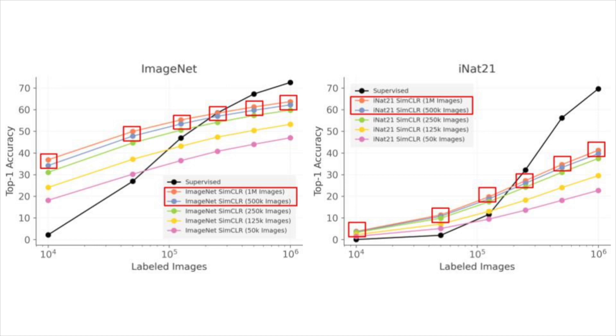We also note that the marginal benefit of moving from 500,000 to 1 million pre-training images is minimal. In many applications, doubling pre-training time for an extra 1% to 2% performance is not worthwhile.